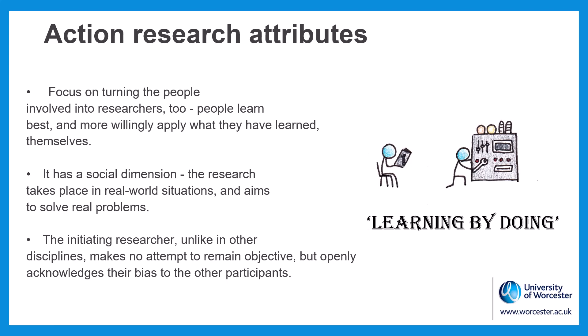Several attributes separate action research from other types of research. Primary is its focus on turning the people involved into researchers too — people learn best and more willingly apply what they have learned when they do it themselves. It also has a social dimension: the research takes place in real-world situations and aims to solve real problems. Finally, the initiating researcher, unlike in other disciplines, makes no attempt to remain objective but openly acknowledges their bias to the other participants.